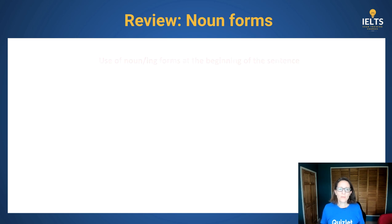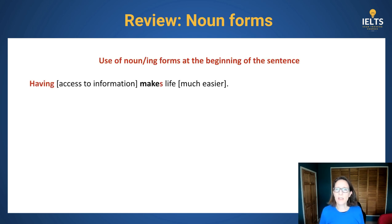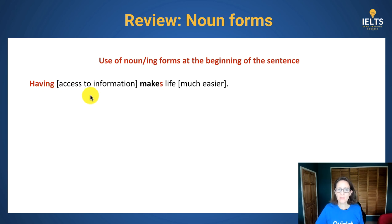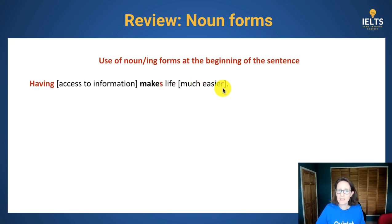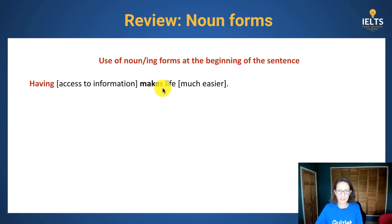Noun forms make your writing more academic. -ing forms at the start of the sentence help you talk about the results. For example, it makes life better — but it could be easier or more difficult, more complicated. 'Makes' is a crucial verb here.